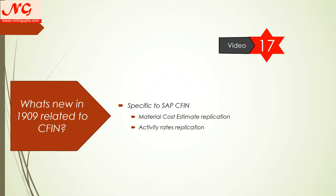Activity rates in CO — when you plan activity types, each activity is assigned a rate. For example, consulting is in hours unit and they say $100 per hour. Those rates, if you maintain in ECC, can be replicated to S4 by activity. That requires activity mapping, and accordingly the rates come across. This is very specific to Central Finance replication.